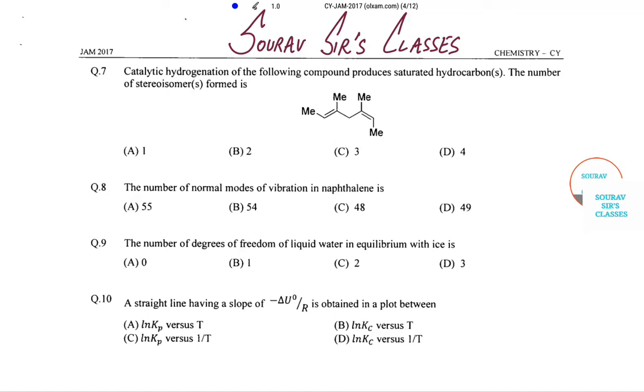Hello and a very warm welcome to Sourav Sir's Classes. In today's tutorial, we will solve IIT JEE 2017 paper on chemistry. Let's get started. We will start with question number seven. We have already solved questions one to six in our previous tutorial. The question says catalytic hydrogenation of the following compound produces saturated hydrocarbons.